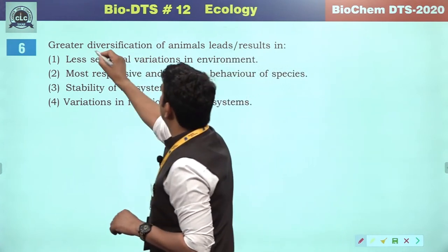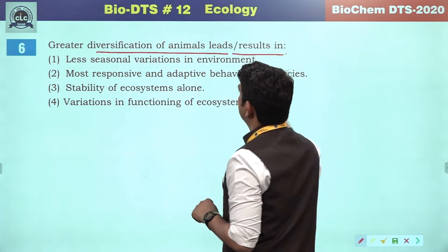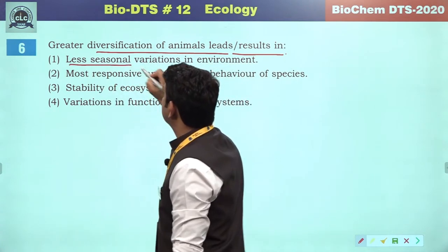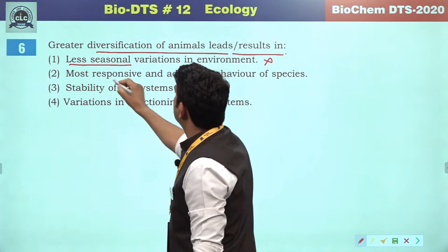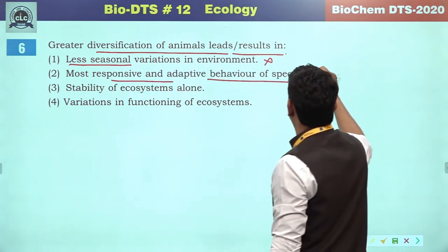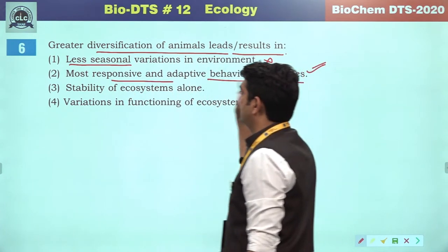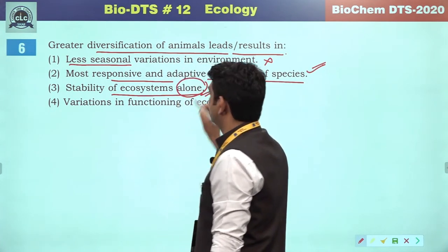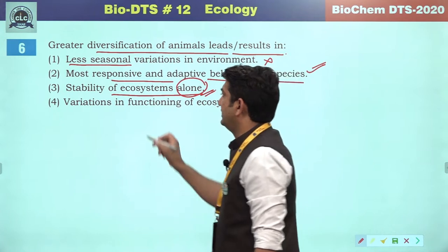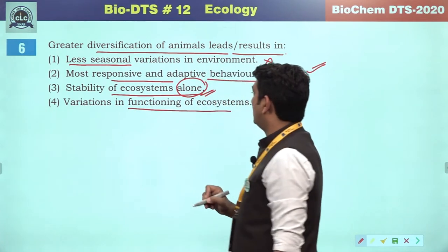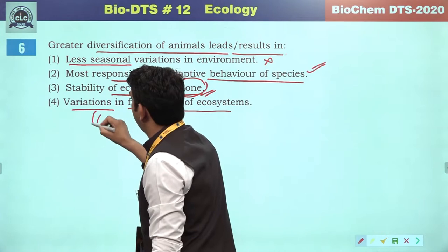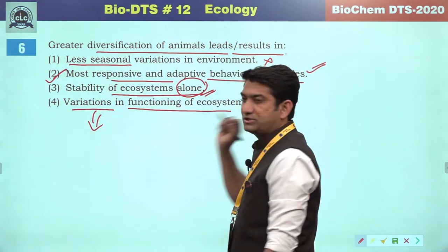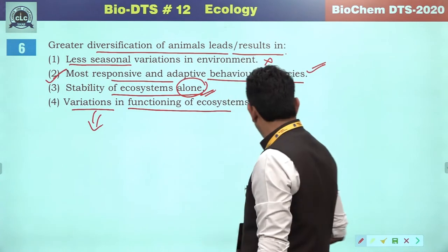Greater diversification of animals will not lead to least regional variations. It leads to the most responsive and adaptive behavior of species. We cannot conclude stability of ecosystem alone, and variations in functioning of ecosystems will be less variable. So the correct answer will be the most responsive and adaptive behavior of the ecosystems.